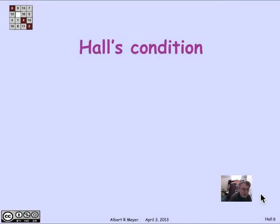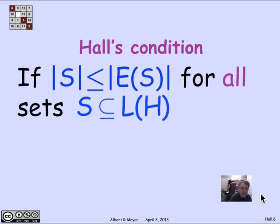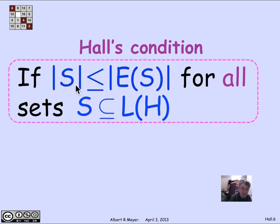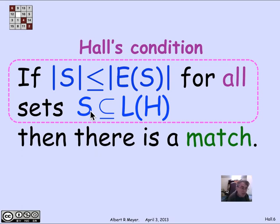We can now state the no-bottleneck condition — Hall's condition — as follows: if the size of S is less than or equal to the size of its image under the edges, for every set S of left vertices of H, that's called Hall's condition. If Hall's condition holds, then there is a match. This is a precise statement of Hall's theorem with no boys and girls mentioned.